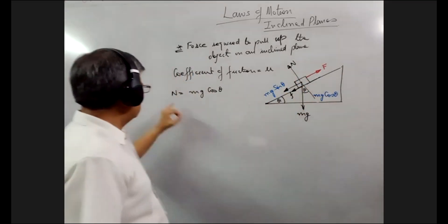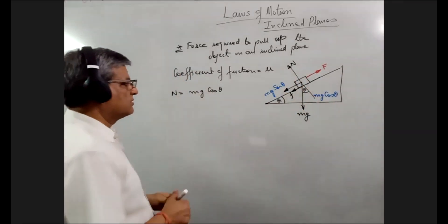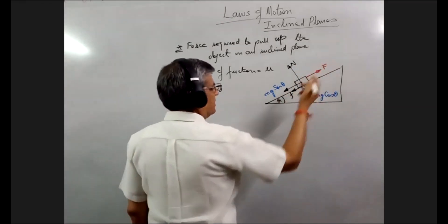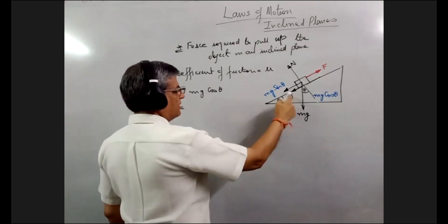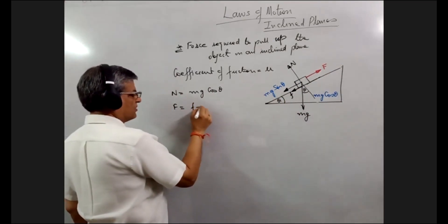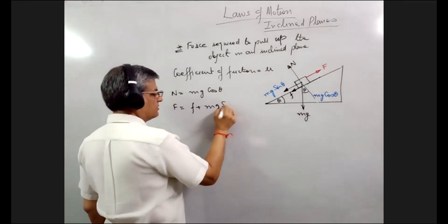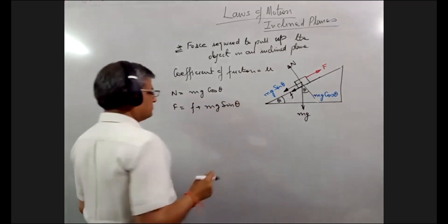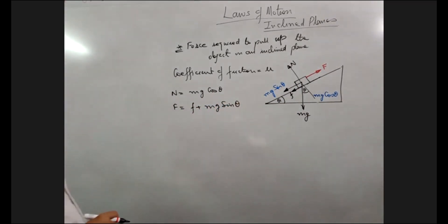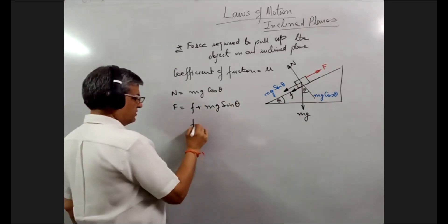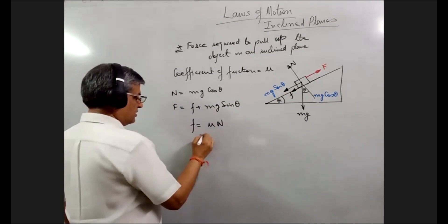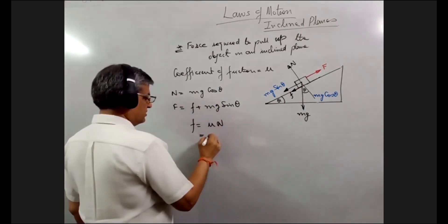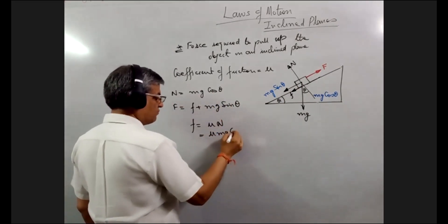The applied force F equals F friction plus mg sin theta. Now we know that force of friction equals mu times the normal reaction, and the normal reaction is mg cos theta. So F friction equals mu mg cos theta.